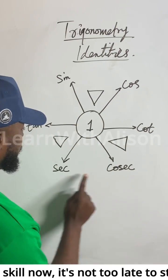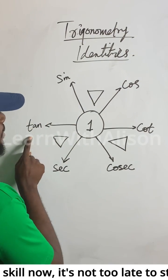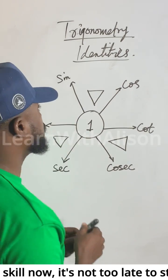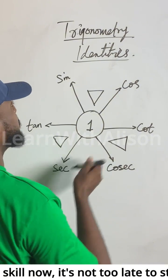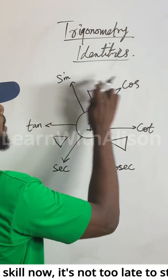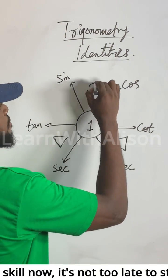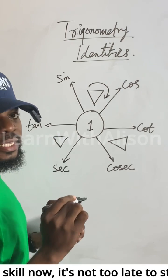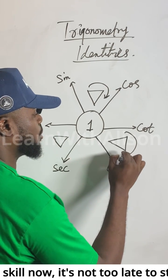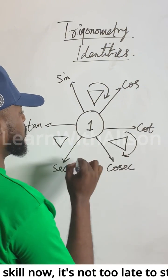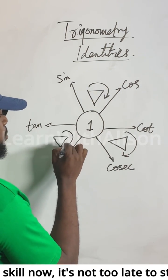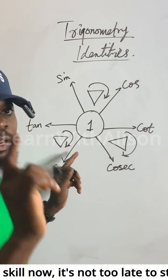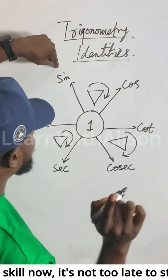Now look at this — sine, cos, tan. We have one at the center. What we need to do is have sine plus cos with this particular arrow. Drop in the comment section whether it's clockwise or anti-clockwise — just for these three parts.